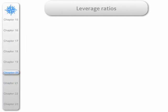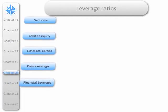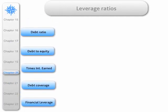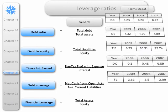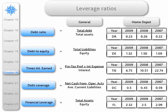And finally, we have the leverage ratios: debt, times interest earned, and so on. Here they are in general terms, and here they are in relation to Home Depot. Once again, you can make your own inferences.